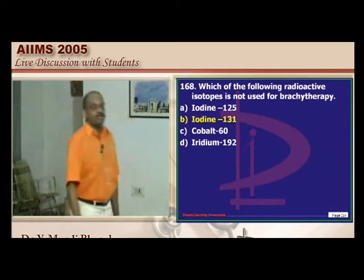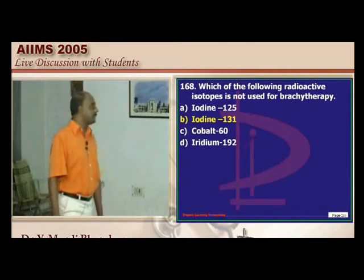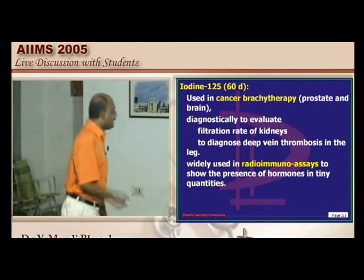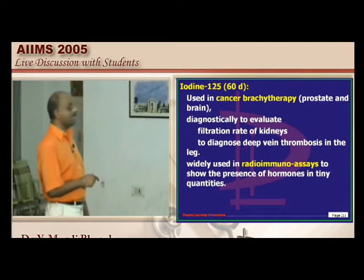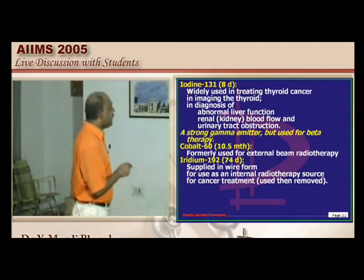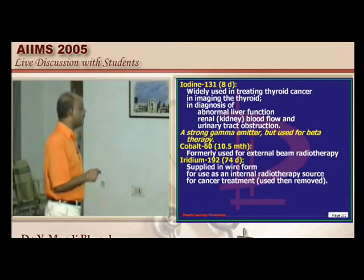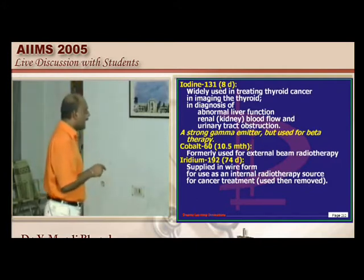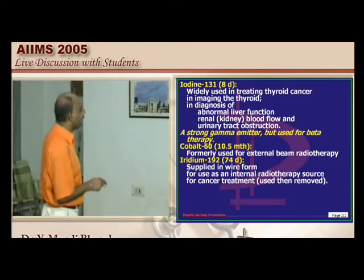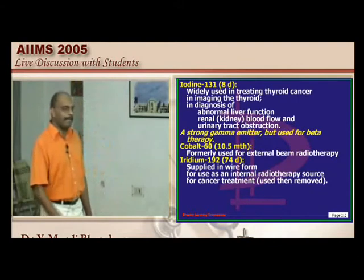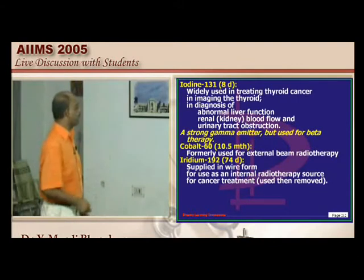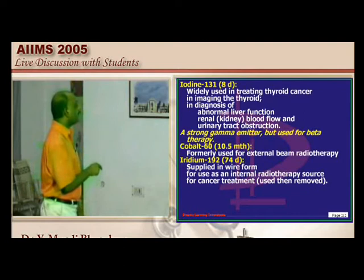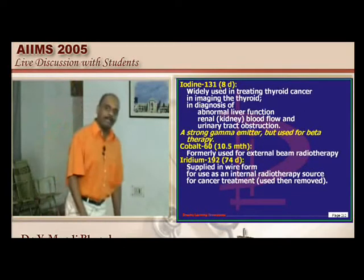Which radioactive isotope is not used for brachytherapy but more for external therapy? I-125 is used for cancer brachytherapy in prostate and brain, and diagnostically for kidney filtration evaluation and radioimmunoassays. I-131 is used for treating thyroid cancer and thyroid imaging but not really for brachytherapy. Cobalt-60 is used for external beam radiotherapy and brachytherapy. Iridium, supplied in wire form, is used in brachytherapy. Therefore, iridium, cobalt, and I-125 can be used for brachytherapy but not I-131.